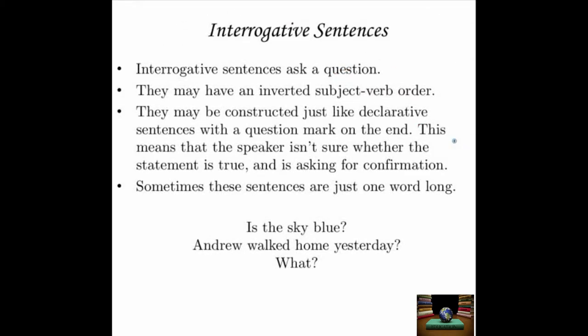Then we have interrogative sentences. You might notice from the name it looks like the English word 'interrogate,' which means to ask someone lots of questions, possibly in an aggressive manner. Interrogative sentences are what you use to ask people questions. They may have an inverted subject-verb order, putting the verb before the subject, unlike a normal declarative sentence. They may also be constructed just like declarative sentences with a question mark on the end, meaning the speaker isn't sure whether the statement is true and is asking for confirmation.